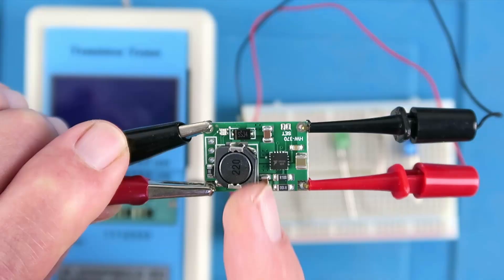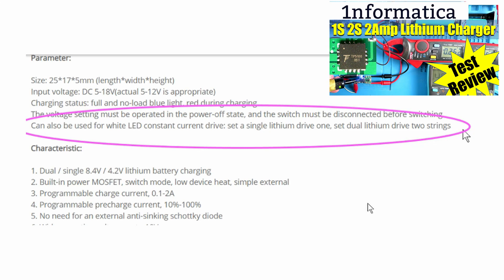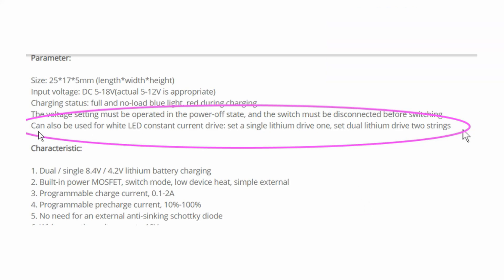On today's episode, when researching my video for this lithium charger, I was intrigued to see this line in the product description: Can also be used for white LED constant current drive, set a lithium drive 1, set dual lithium drive 2 strings. Now what on earth does that mean?